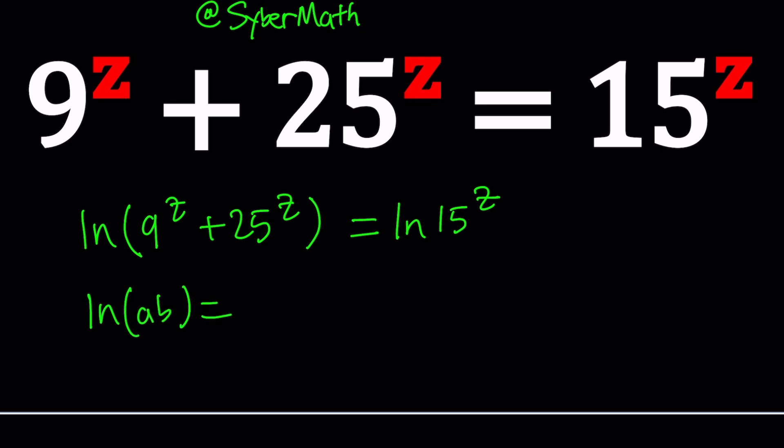If you have the log of a product, it'll turn into the sum of two logs like this. Of course, A and B, if you're talking about real numbers, they have to be positive, but we're in the complex world, so we don't have to worry about it.